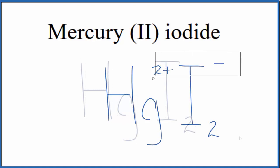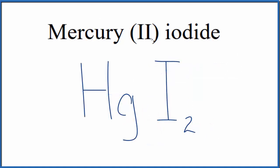So this is the formula for mercury(II) iodide, HgI2. This is Dr. B, thanks for watching.